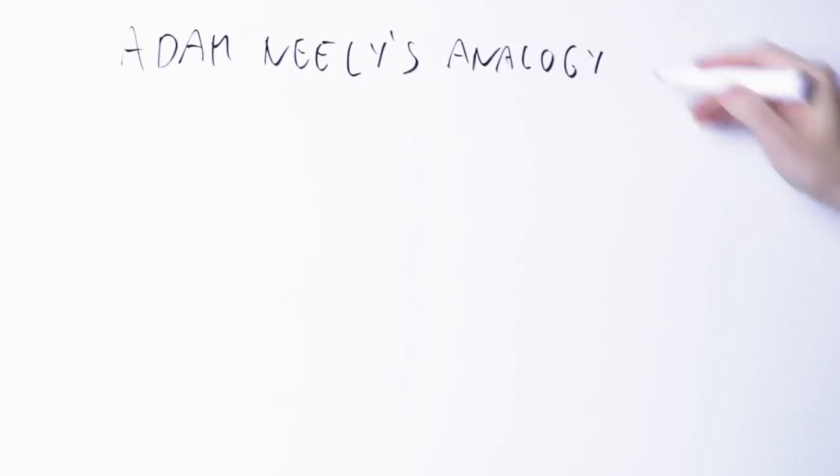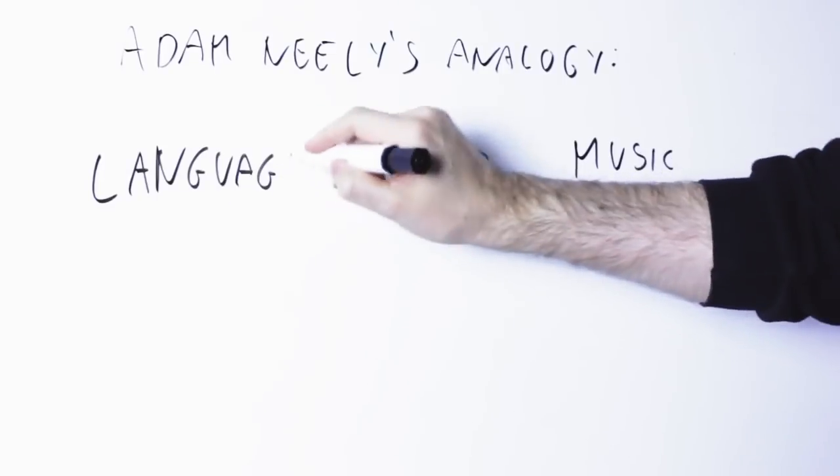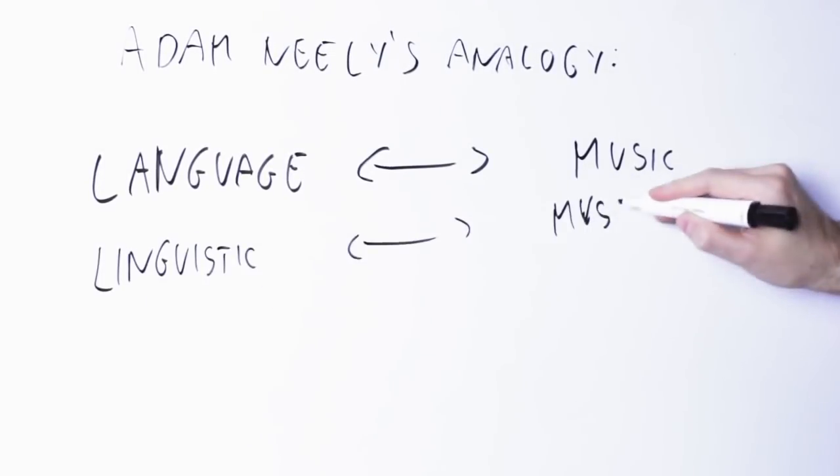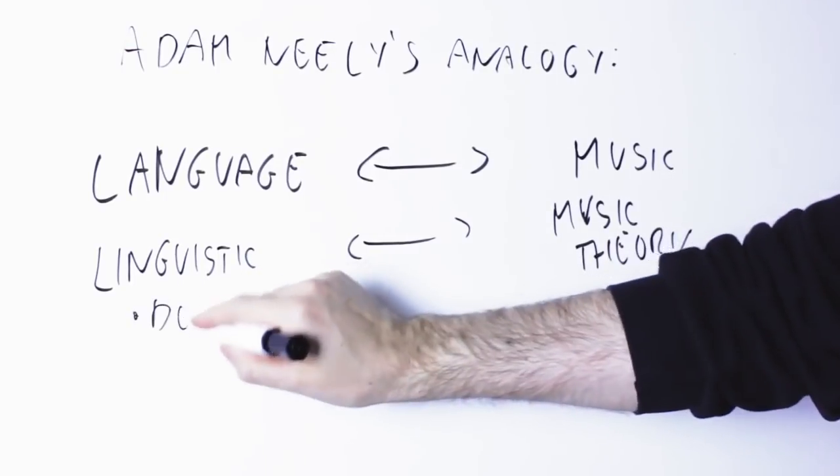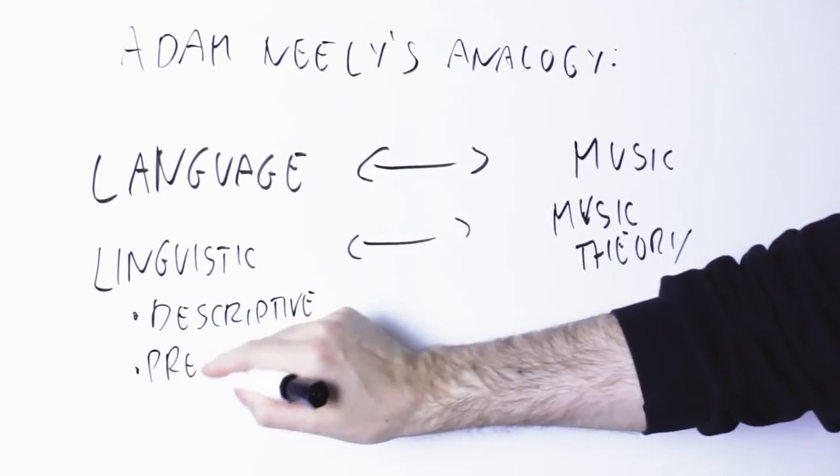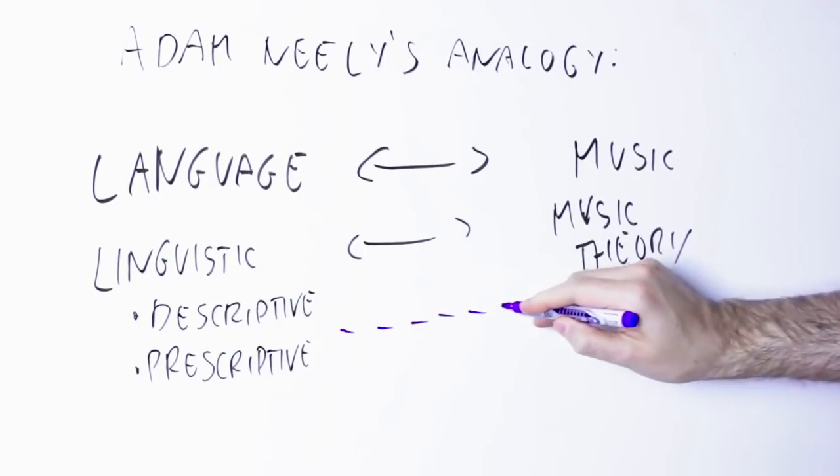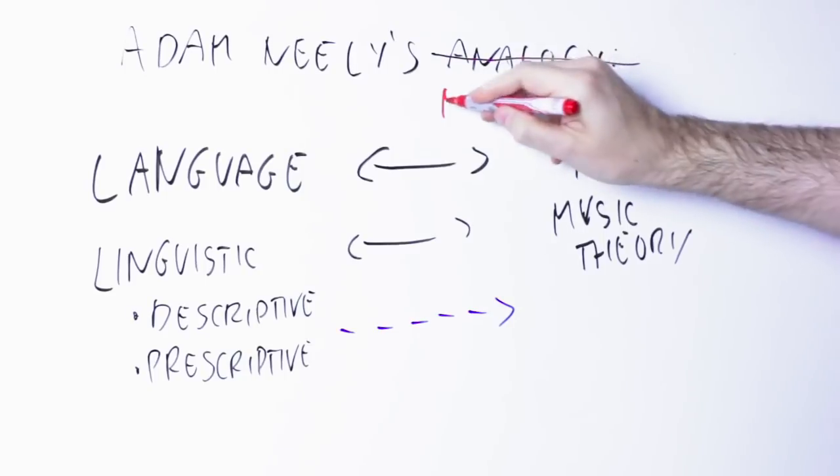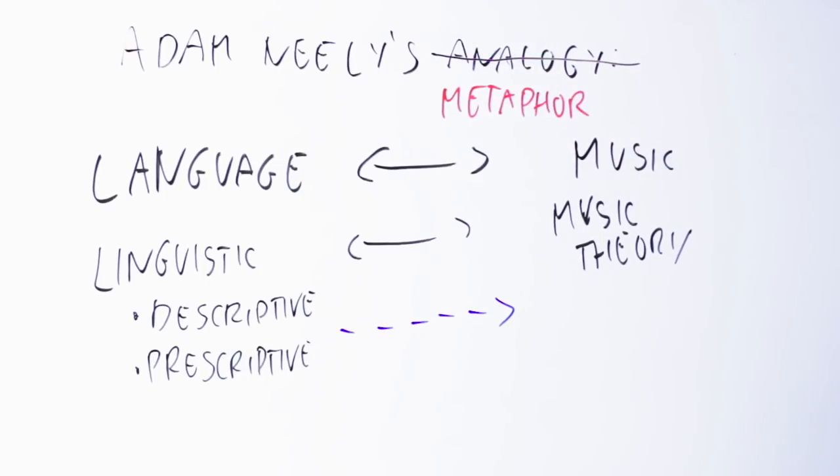But anyway, the idea here is that Adam was making a parallel between music and language, and so linguistics become the analog of music theory. Since there are two approaches in linguistics, descriptive and prescriptive, those would apply also to music theory. The problem is that music is a language is at best a metaphor, and if you push it too far it breaks, and in this case it definitely breaks spectacularly.